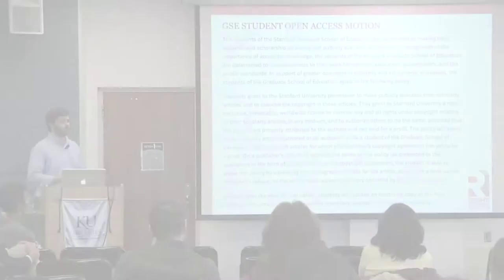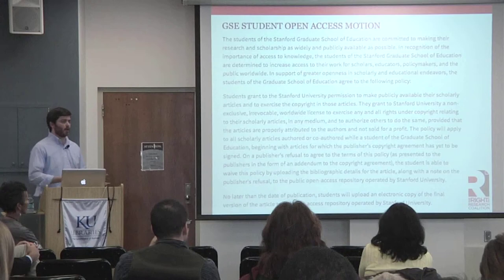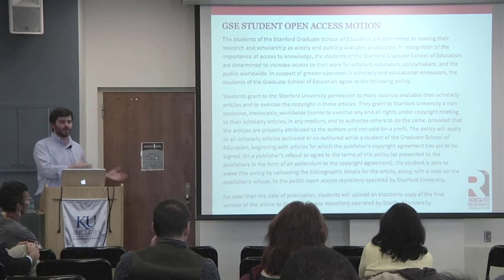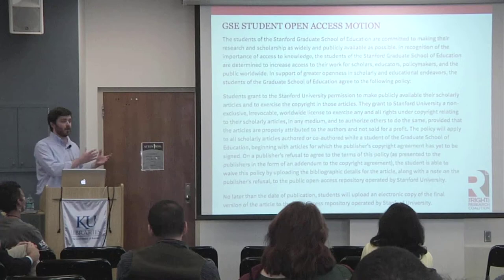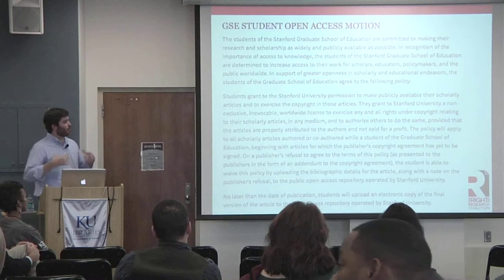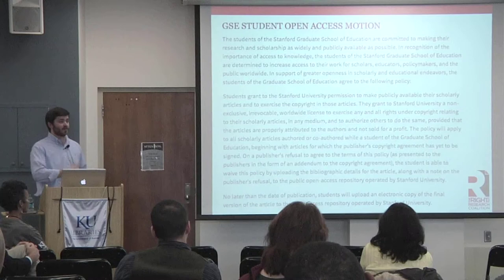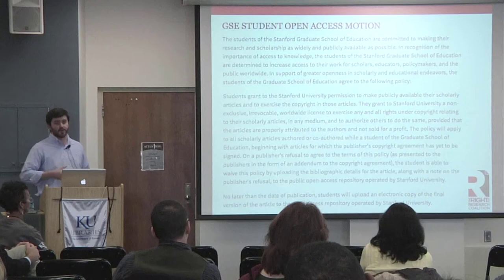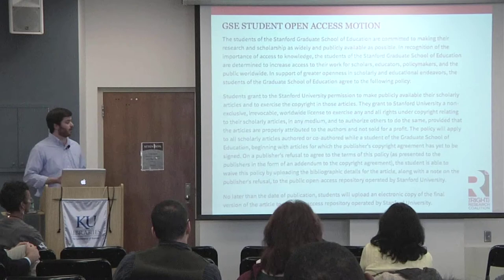The policy functions by giving the university a license to make any articles you publish freely available. There's still an opt-out clause if you want to publish in a journal that won't allow this, so it will never limit where you can publish. One way KU could continue being at the forefront of the open access movement would be to consider an expansion of that policy for graduate students here. If any of you are interested in starting to think through what a campaign for that might look like, I'm happy to talk through that with you and connect you with the student who led the effort at Stanford.